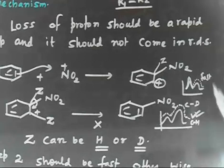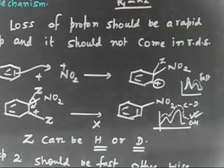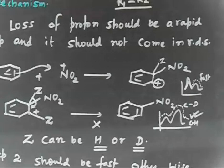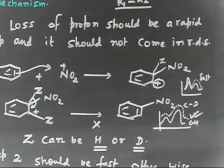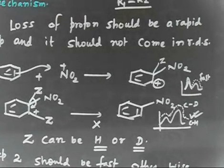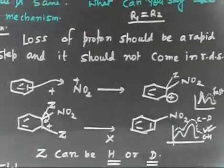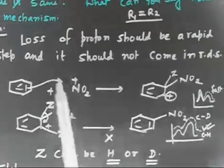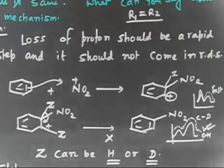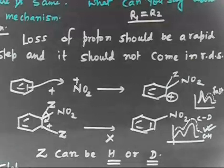So step one must be the rate-determining step, and step two must be a fast step. If step two were the slowest step, C-H would break easily and C-D would not, so the rates would differ — but that is not the case. Since both rates are equal, the loss of H⁺ or D⁺ in step two must be a rapid step and cannot be rate-determining.